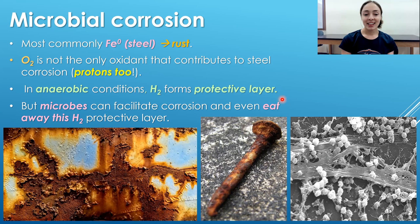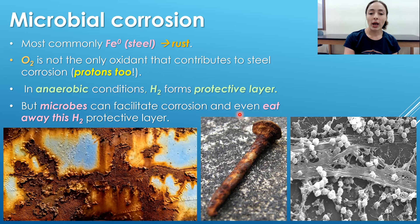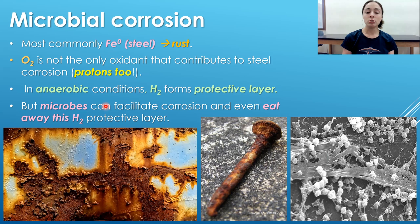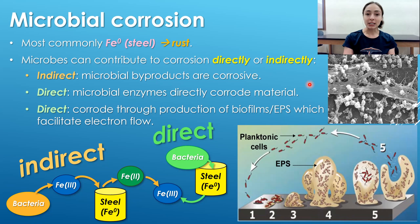Getting into the microbial aspect: microbes present in that environment can actually facilitate corrosion by eating away at any protective layers that form. Some microbes can use H₂ or hydrogen compounds to gain energy — they take the hydrogen and use it in their metabolic processes. Many anaerobic microbes do this because they don't have oxygen, so they consume that protective H₂ layer, continually exposing fresh steel surfaces underneath, which leads to more oxidation and corrosion.